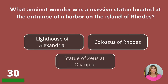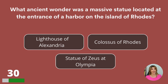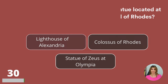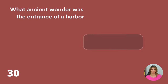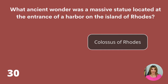What ancient wonder was a massive statue located at the entrance of a harbor on the island of Rhodes? The Lighthouse of Alexandria, the Colossus of Rhodes, or the Statue of Zeus at Olympia? The Colossus of Rhodes.